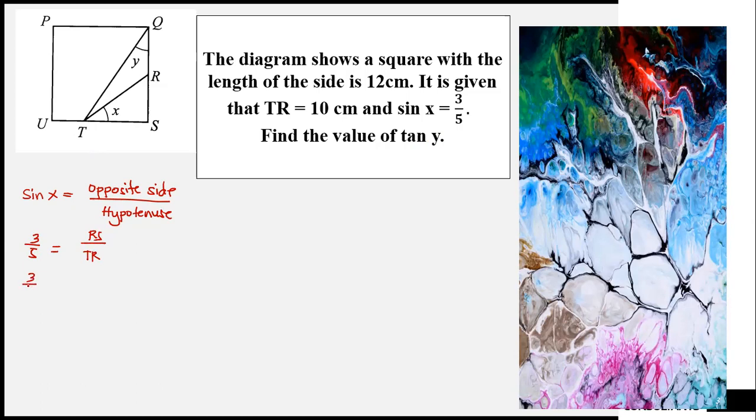3/5 is equal to RS divided by TR which is 10. So RS is equal to 3/5 times 10. 3 times 10 is equal to 30 divided by 5 is equal to 6 cm. So RS now has a measurement of 6 cm.